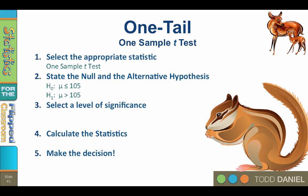Step three, select a level of significance. We have already established that we are doing a one-tailed test. The alpha level is set to 0.05, so all we need are the degrees of freedom. Degrees of freedom equals n minus 1, so the answer for step 3 is one-tailed test, alpha equals 0.05, degrees of freedom equals 29.